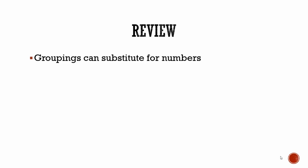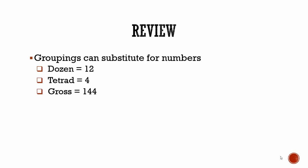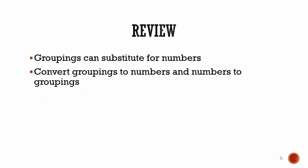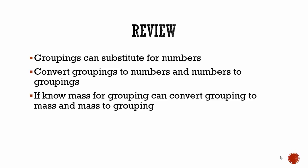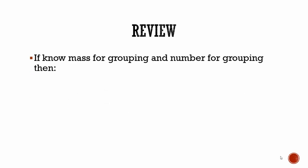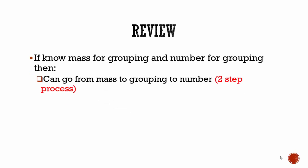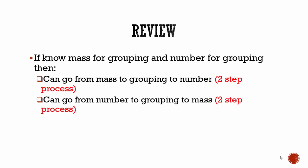To review: groupings can substitute for numbers — dozens equals 12, tetrad equals 4, gross equals 144, and so on. You can convert groupings to numbers and numbers to groupings, provided you know the definition of the grouping. If you know the mass for a grouping, you can convert from group to mass and mass to grouping. If you know both the mass and number for a grouping, you can go from mass to group to number — a two-step process — or from number to group to mass, also a two-step process.